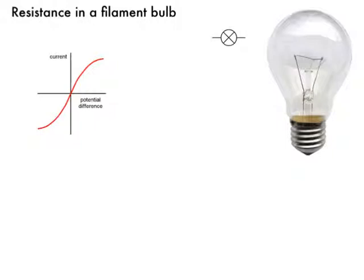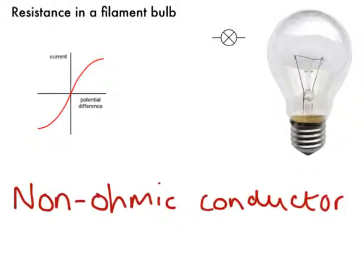Well, why is that? It's because of the change in temperature. Ohmic conductors are those referring to things at constant temperature. As the wire in the filament starts to heat up, the ions that it's made out of start to vibrate more, so they cause more collisions with the flowing electrons. The current is the flow of electrons, which causes more resistance because they're bumping into more things. And the increase in electrical resistance resists the flow of the current.